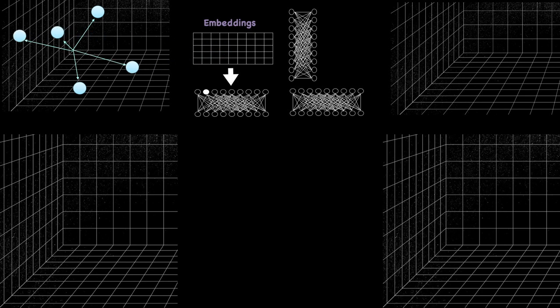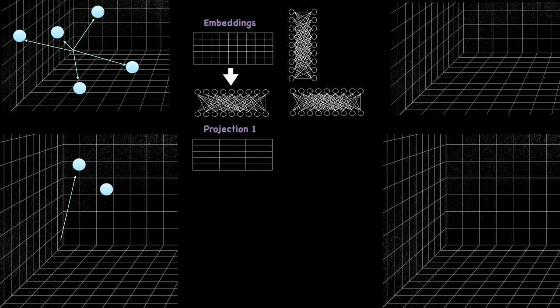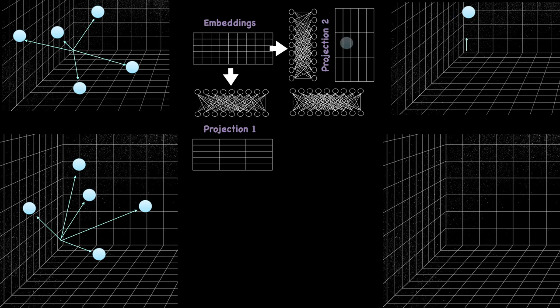We connect the input matrices to three different linear layers. The first linear layer produces Projection 1, also known as the query matrix. For the question and answer encoders, the input matrix is the question and answer embeddings. If we're in the decoder, the input matrix is the output of the answer encoder. The second layer produces Projection 2, also known as the key matrix. For the question and answer encoders, the input matrix is the question and answer embeddings. For the decoder, the input matrix is the output of the question encoder.